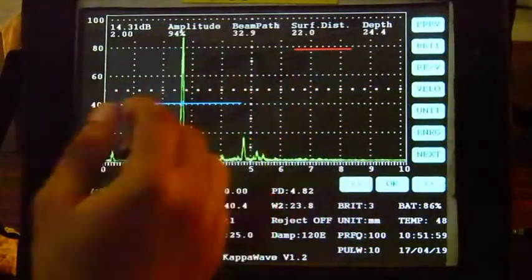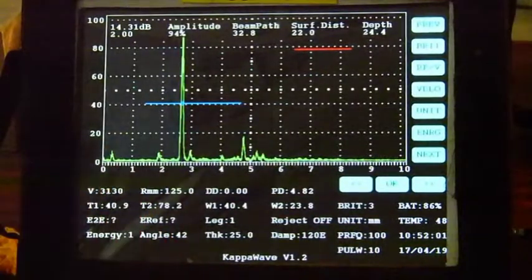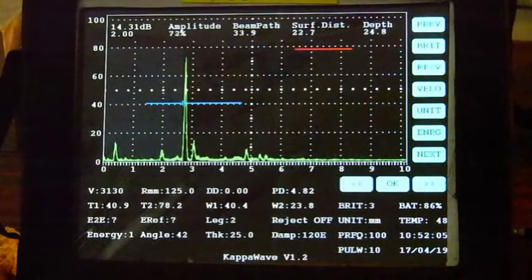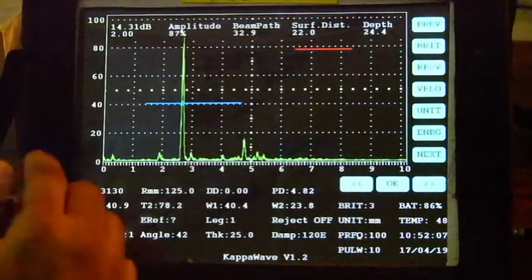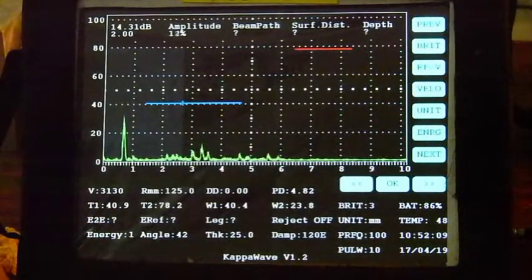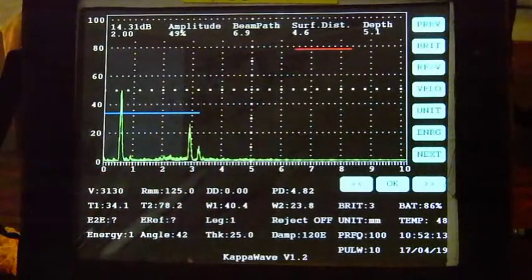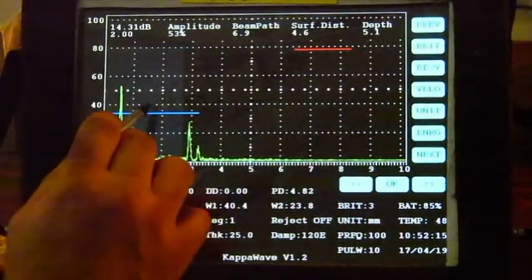So as a signal is gated, the instrument is geared to give you the beam path, surface distance and depth. In this case the depth is shown as somewhere about 24 mm. Another signal when you gate it says it is about 5.1 mm in depth.